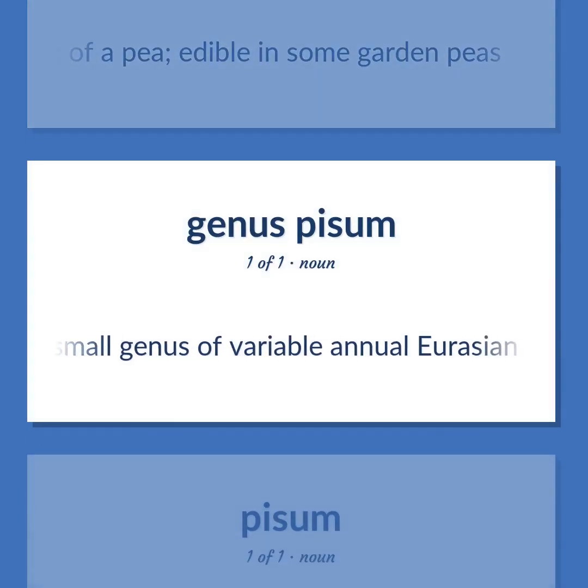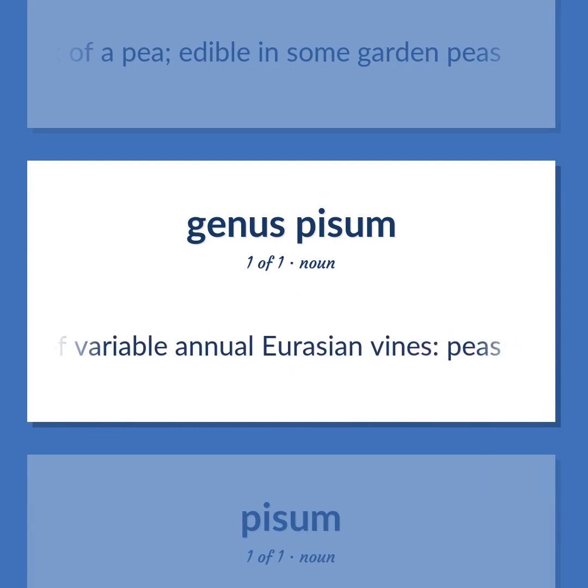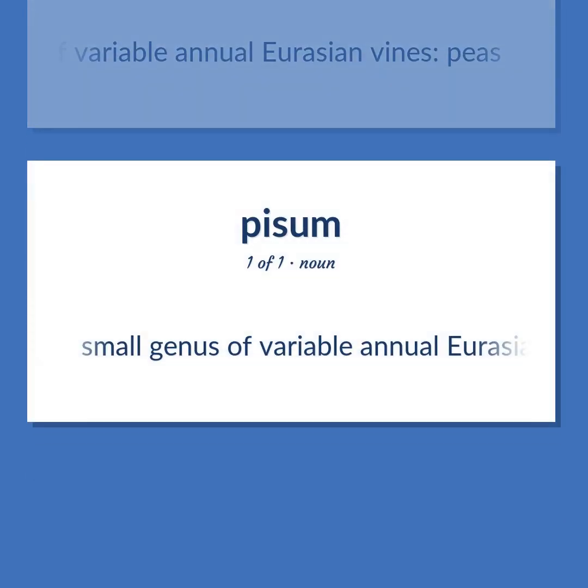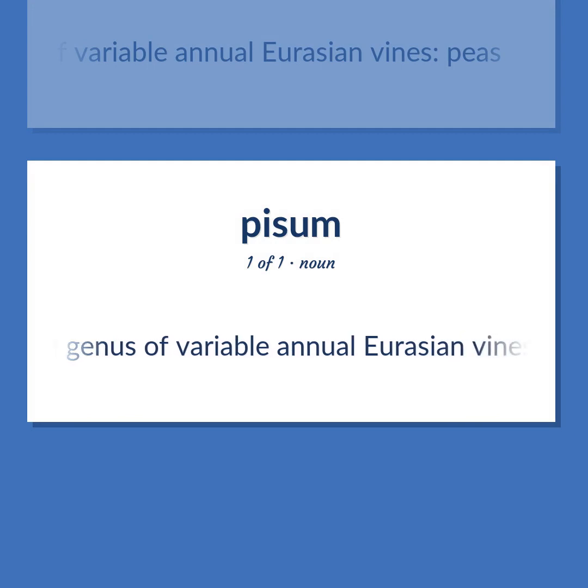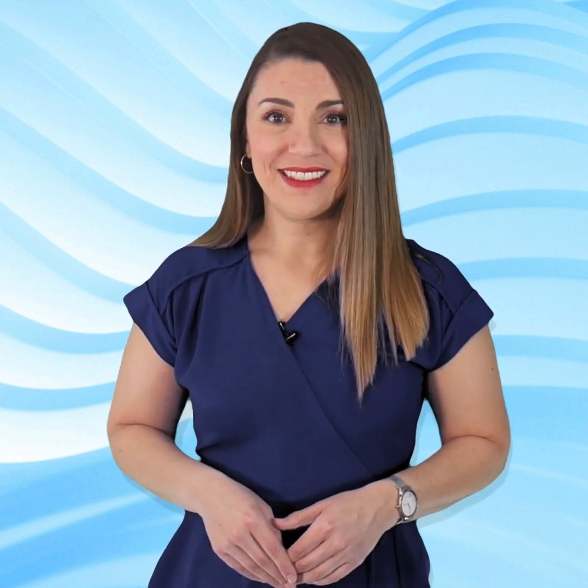Small genus of variable annual Eurasian vines — peas. Become our student and get access to effective and free educational materials. Subscribe to our YouTube channel to become part of our growing community and to learn English effectively.